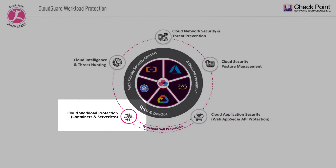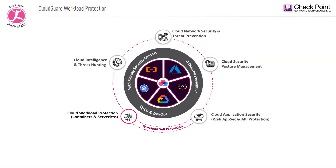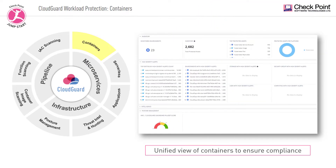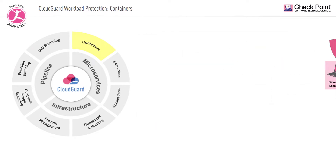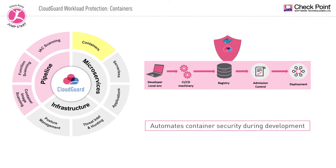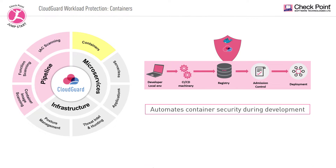CloudGuard Workload Protection, which is part of the CloudGuard Native Security Platform, provides a unified view of container assets across all cloud environments to ensure configurations are in compliance with known baselines, such as CIS, Kubernetes Security Benchmarks, or NIST 800-190. In addition, security and compliance configurations can be built into CI/CD to automate container security during development.